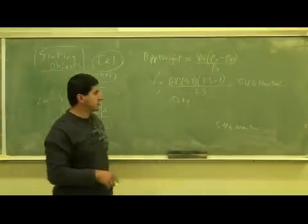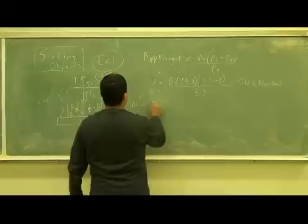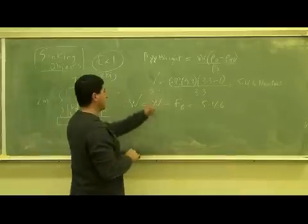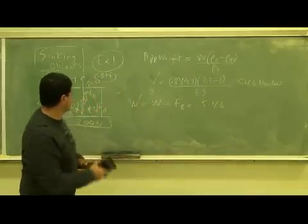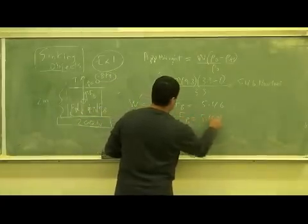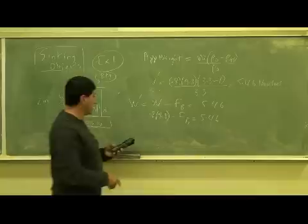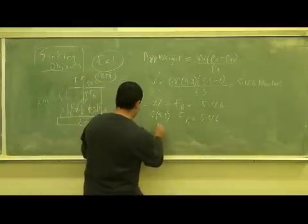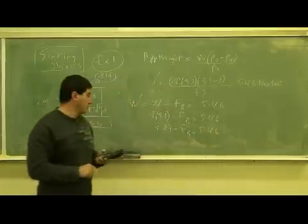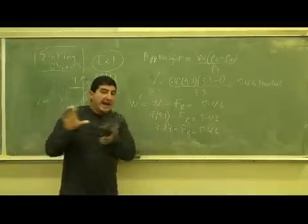So how much is that going to be? Is that going to be 5.46? Not really. That's the apparent weight. Remember the apparent weight is the actual weight minus the buoyant force, which is equal to 5.46. The actual weight is 0.8 times 9.8. So the actual weight is equal to 7.84 newtons, and then the buoyant force which we hadn't calculated.